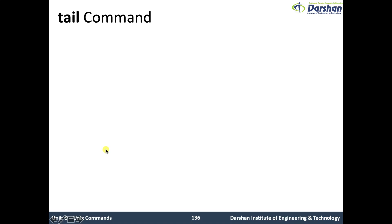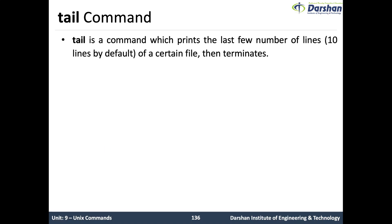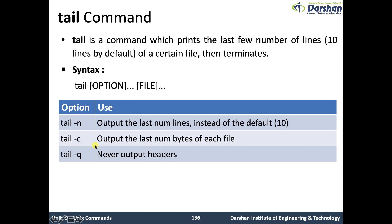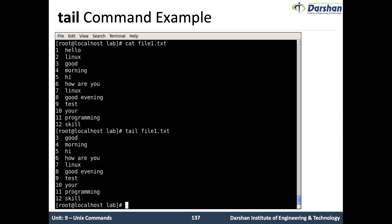The next command is the tail command, which is the exact opposite of the head command. It prints the last few lines — ten by default — of the file, then terminates. The syntax is: tail [options] [filename]. Options: -n outputs the last n lines instead of the default ten; -c outputs the last n bytes of each file; -q never outputs the header, similar to the head command.